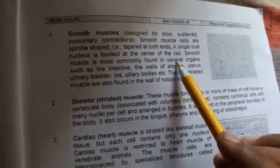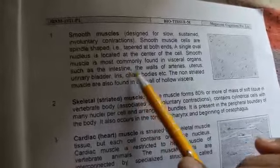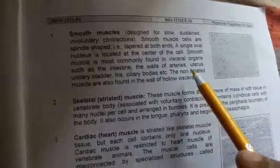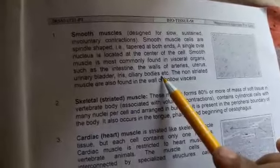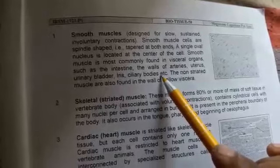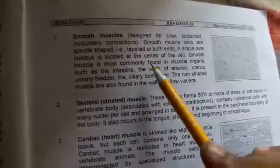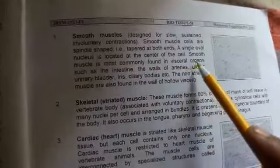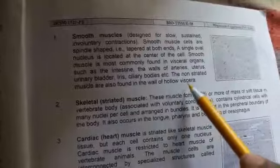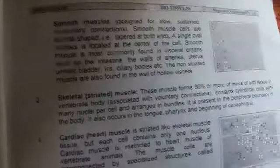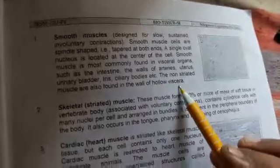Smooth muscle is most commonly found in visceral organs. Visceral organs use kehte hain jo internal parts of the body hote hain — just like intestine, the walls of arteries, uterus, urinary bladder, iris, and ciliary bodies. Ye sab internal organs hain hamare body ke. Non-striated muscles are also found in the wall of hollow viscera.